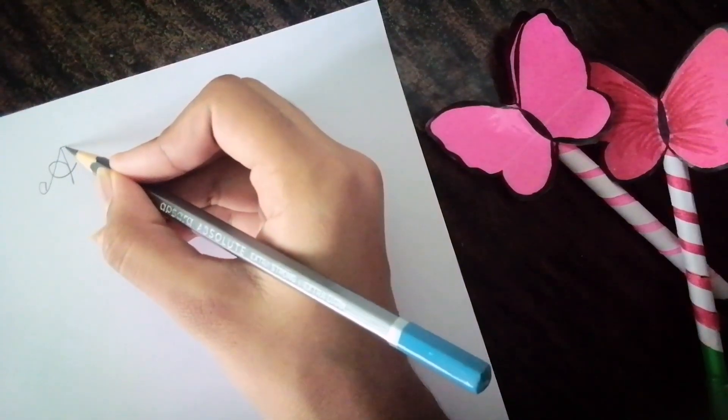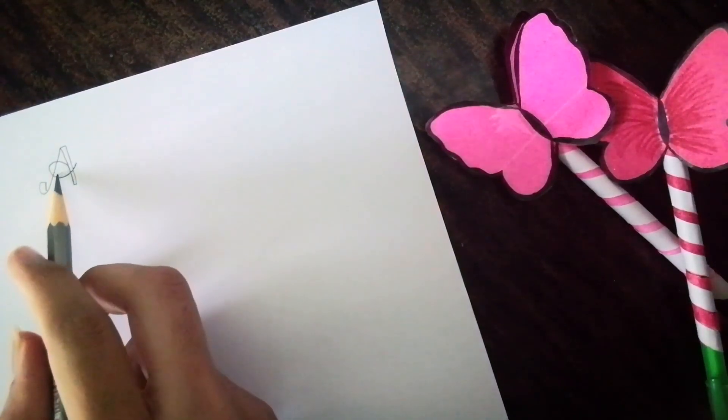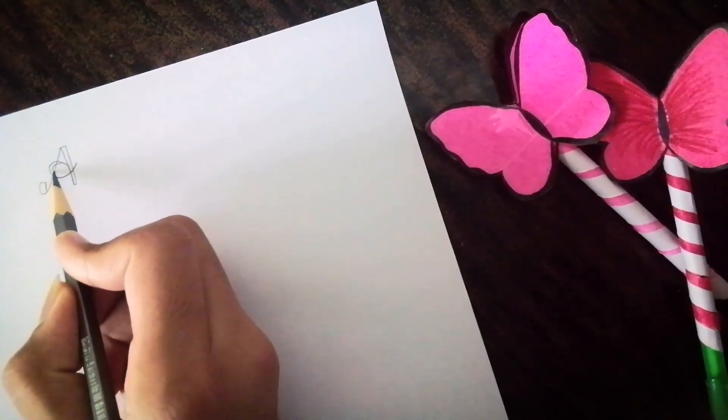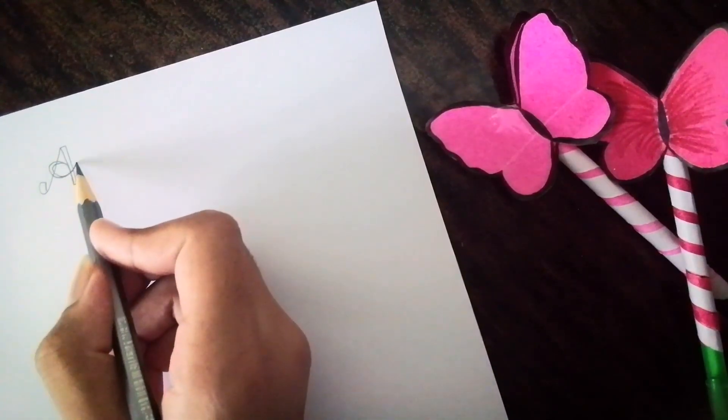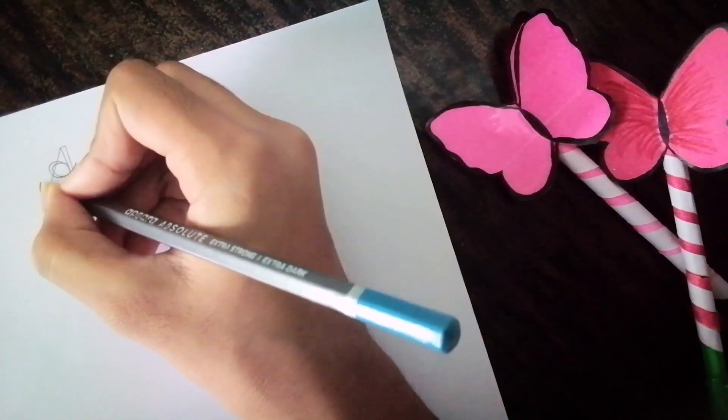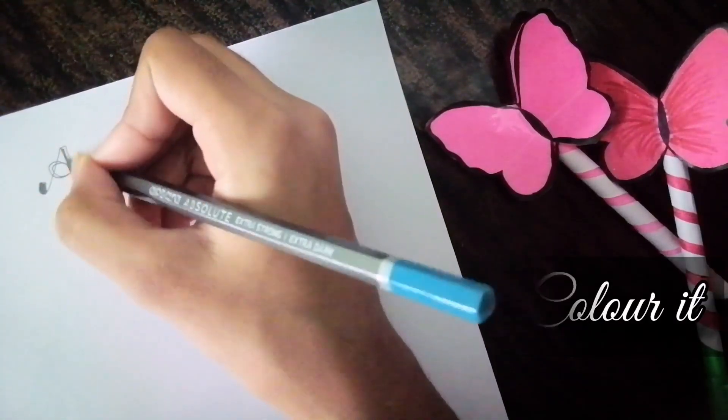Then again the line is going up, leave it as it is, don't touch it. Then you see it's going down, so make it thick. If you again see, it's going down, so make it thick like this. It's going up, leave it as it is. Now next step is to color it. See that there are no white spaces.